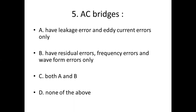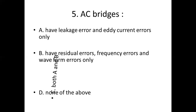Fifth bit. AC bridges: Option A, have leakage error and eddy current errors only. Option B, have residual errors, frequency errors and waveform errors only. Option C, both A and B. Option D, none of the above. Answer: Option C, both A and B.